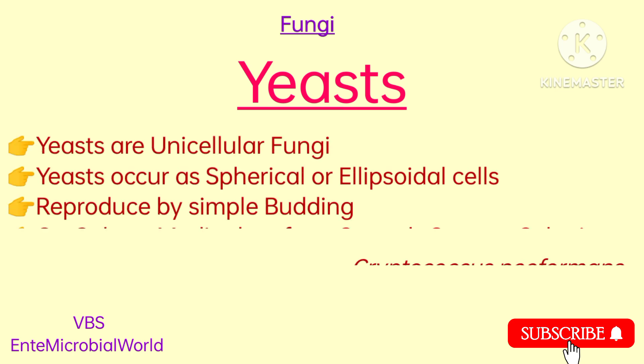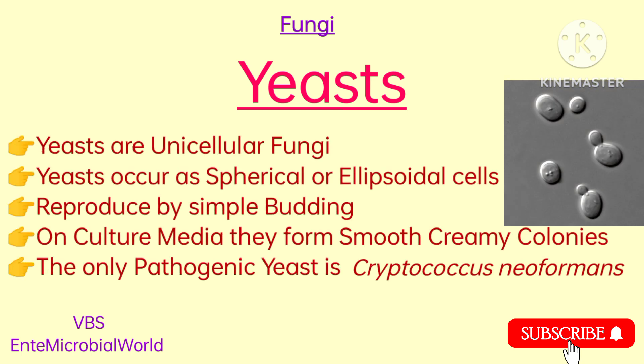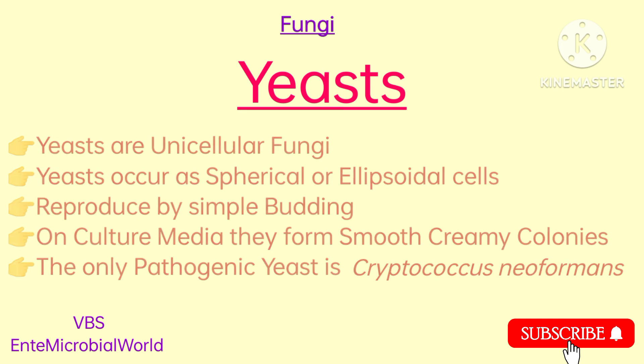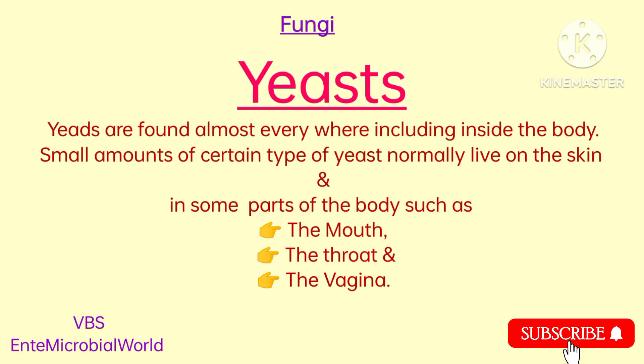Yeasts are the simplest type of fungus. Yeasts are unicellular fungi which occur as spherical or ellipsoidal cells and reproduce by simple budding. On culture, they form smooth, creamy colonies. The only pathogenic yeast is Cryptococcus neoformans. Yeasts are found almost everywhere including inside the body. Small amounts of certain types of yeast normally live on the skin and in some parts of the body such as the mouth, throat and vagina.